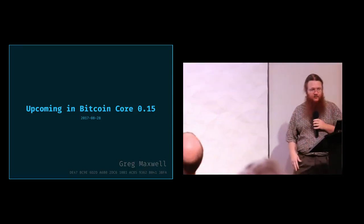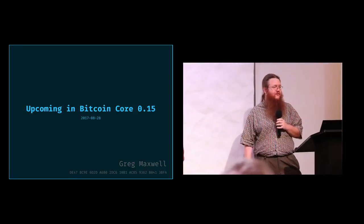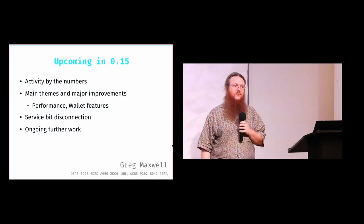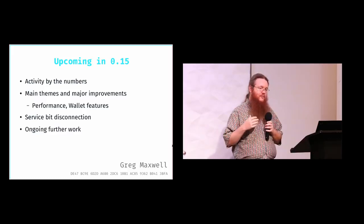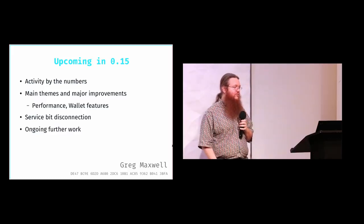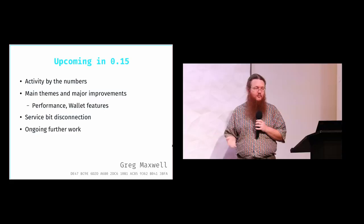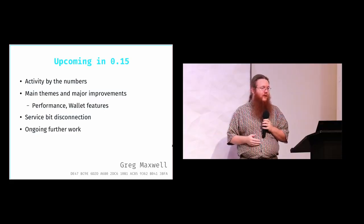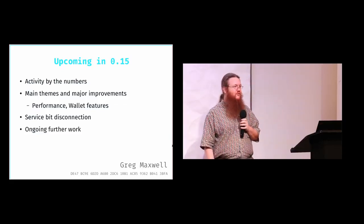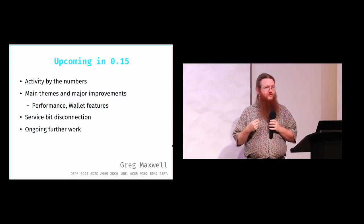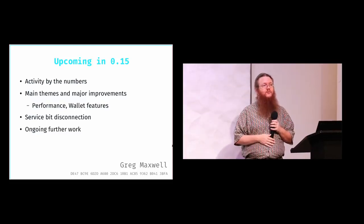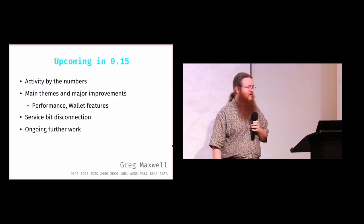The first thing I'm going to talk about for 0.15 is a numbers-wise breakdown — what kind of activity is going on in Bitcoin development right now. I'm going to talk about the major themes and improvements, things about performance and wallet features. I'll also talk about the service bit disconnection change, which is a really minor and obscure thing but created some press. Then I'll talk about some future work that's not in 0.15 but will be in future versions.